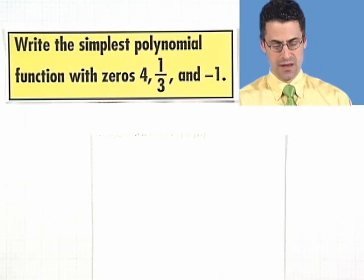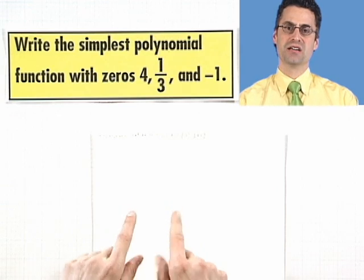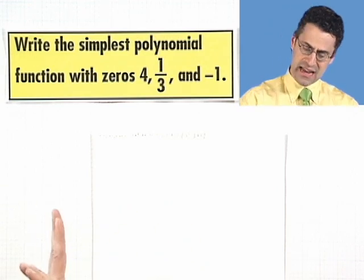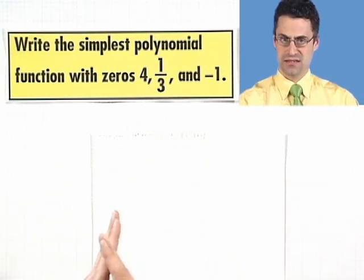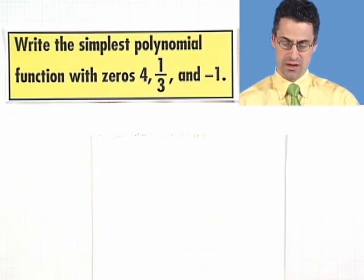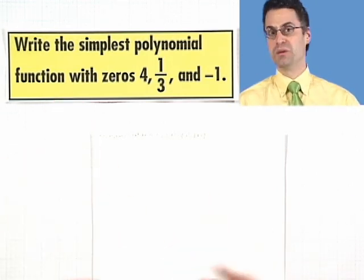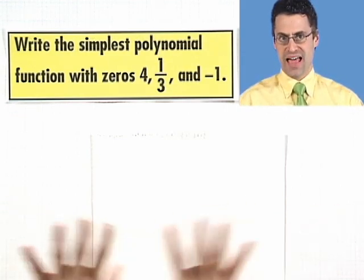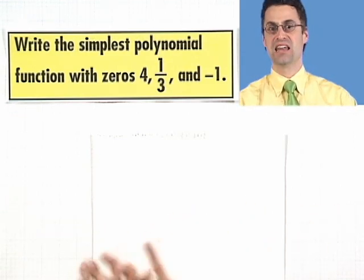Well, now we can see the theorem in action. Because if these are going to be zeros, that means that x minus each of these numbers has to be a factor. So the simplest one, the simplest such polynomial, would be the polynomial that only has those as its factors and nothing else.